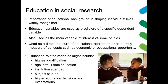Education in social research is a really important area. Educational background is recognized as a highly important factor in shaping individuals' lives and future outcomes. In many studies, education variables might be used as a predictor for a specific dependent variable, although they're also widely used as the main variable of interest. Education-related variables might include highest qualification, age left full-time education, what institution they attended, and so forth.